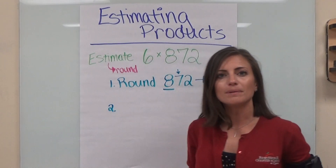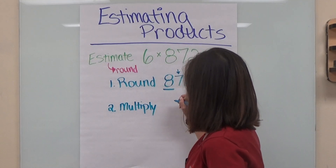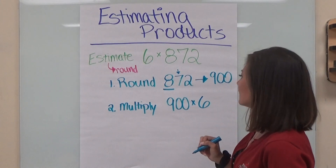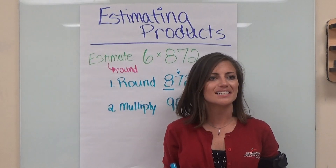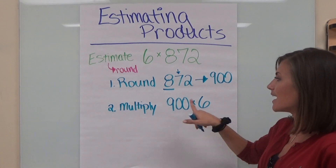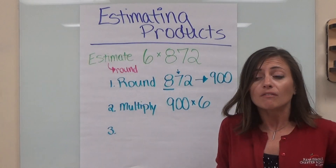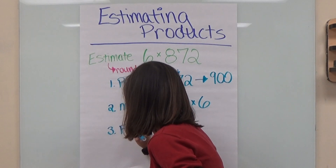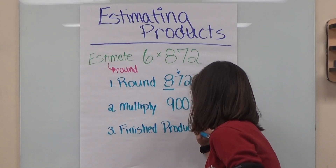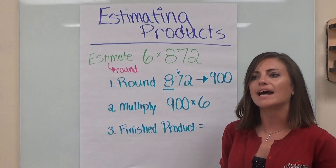Step number two: I multiply. I'm going to multiply 900 times my original factor, which was six. And now here's where our multiplying with zeros lesson is going to come in handy. We've already learned that when we multiply with zeros, we start by multiplying the digits and adding the zeros at the end. So our step number three is going to be to finalize our product. Our finished product is nine times six. So who can tell me what nine times six is?